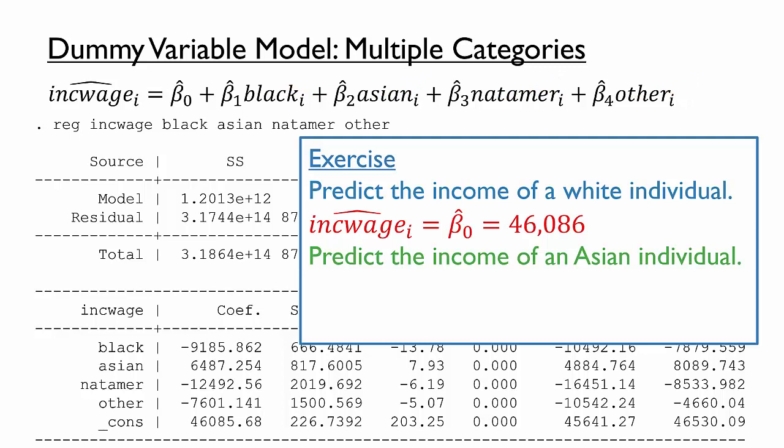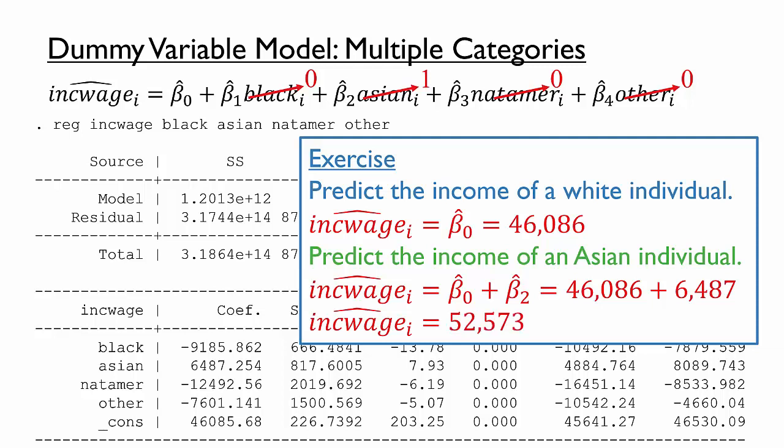Next, let's turn to the predicted income of an Asian individual. We can once again substitute black equals zero. However, the value of the Asian variable is now 1. The Native American and other race variables remain zero. So the predicted income is beta 0 hat plus beta 2 hat, where beta 2 hat is the coefficient on the Asian variable. Once we locate both of those values in the model's output, we can sum the two values to find that the predicted income, and also the average annual income for Asians in the data set, is $52,573.